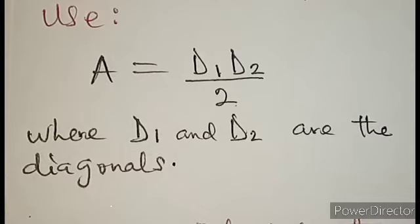Area equals d1 times d2 over 2, where d1 and d2 are the two diagonals. So d1 is representing one diagonal, and d2 is representing the second diagonal.